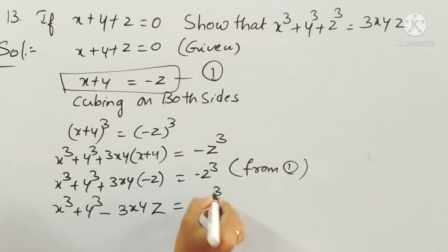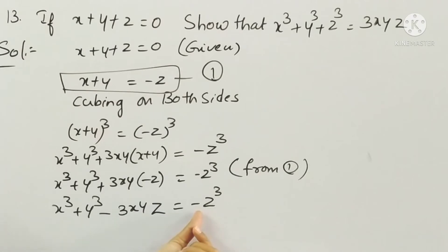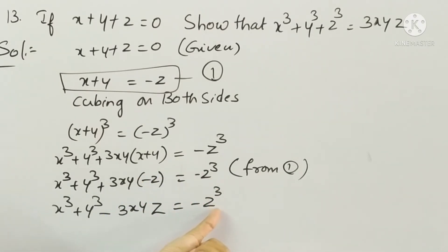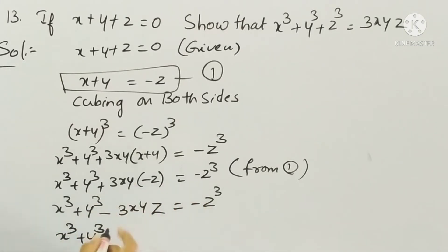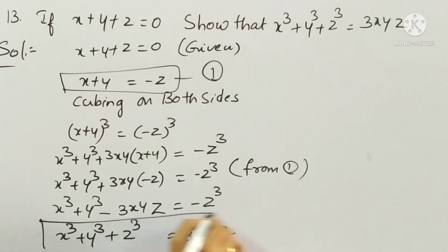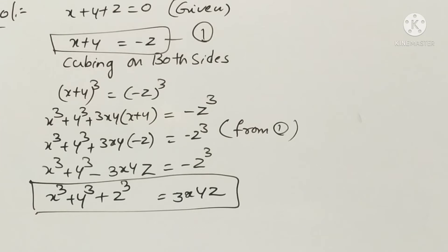Now transposing minus 3xyz to the right-hand side and minus z cube to the left-hand side: x cube plus y cube plus z cube is equal to 3xyz. This is what we had to prove.